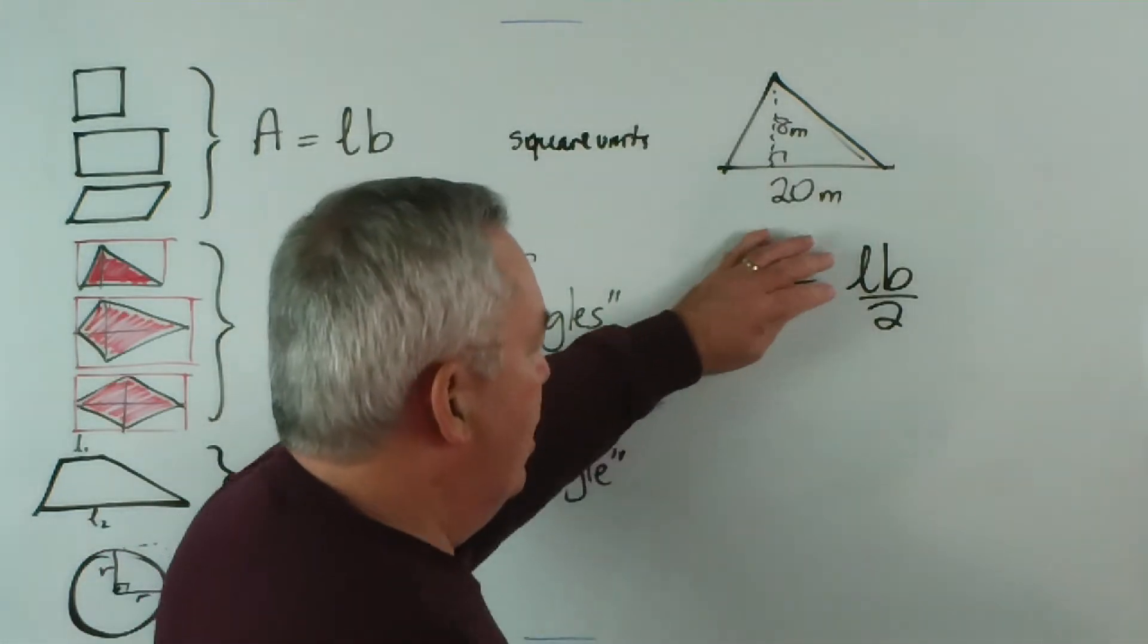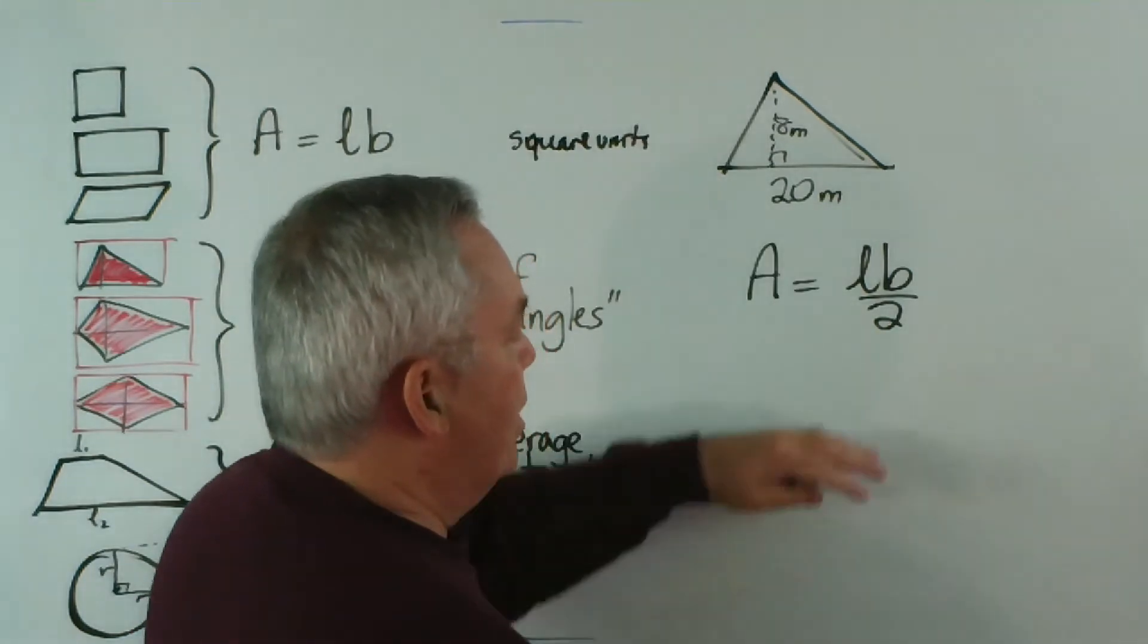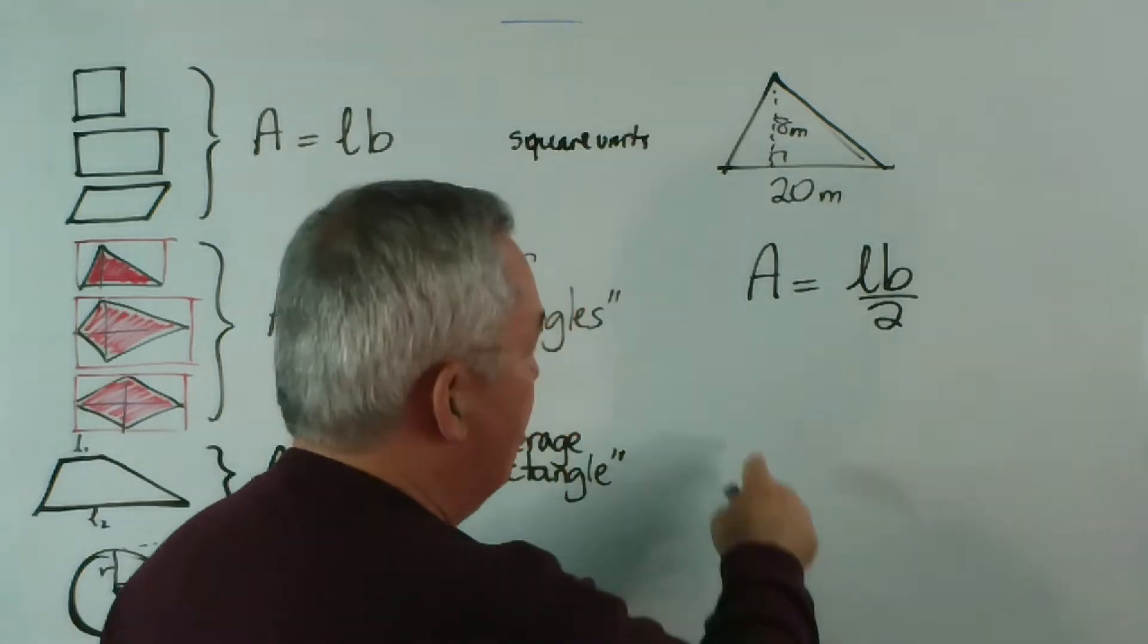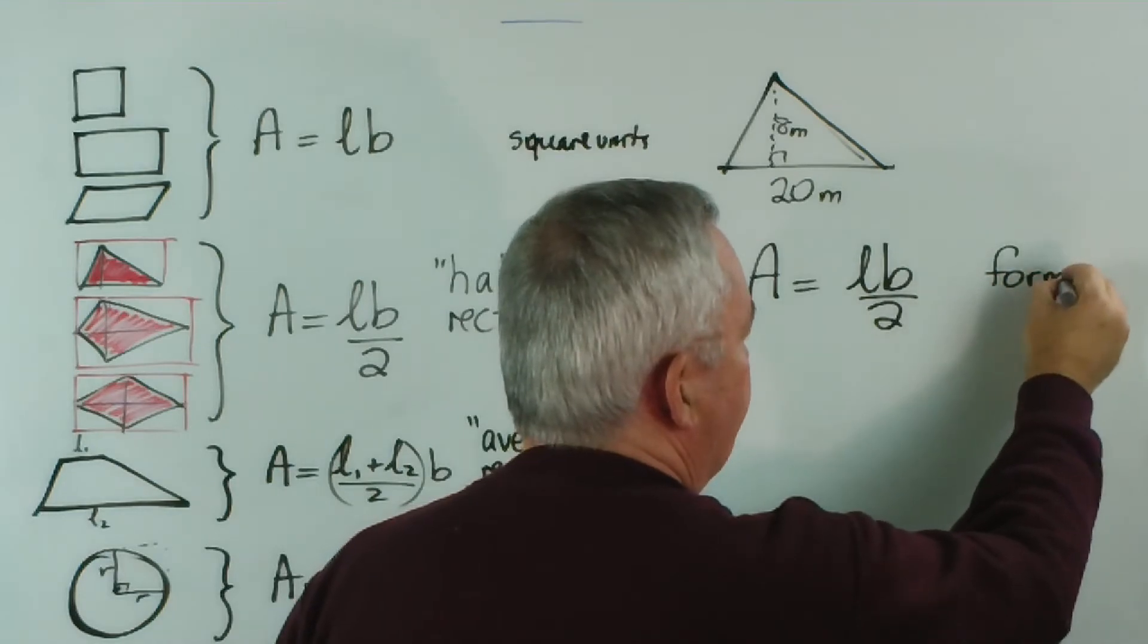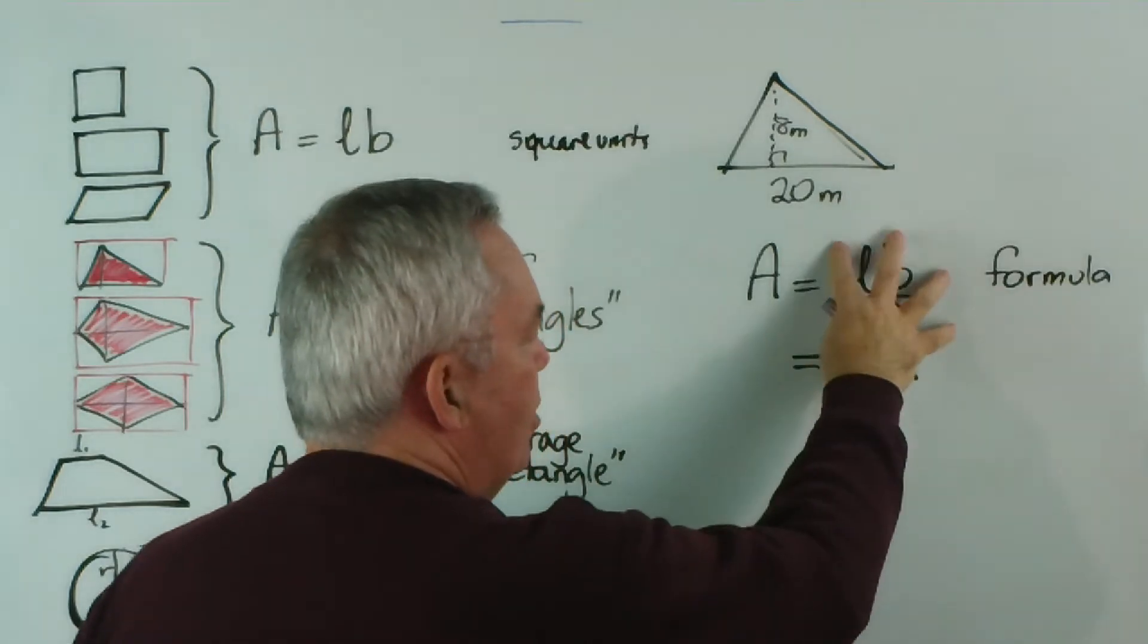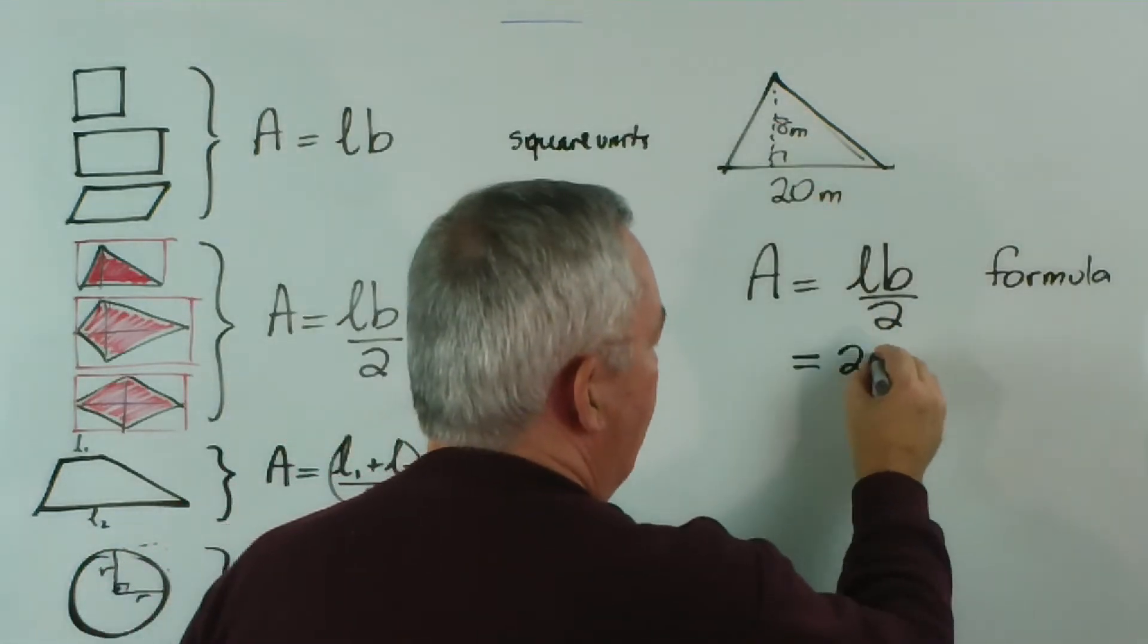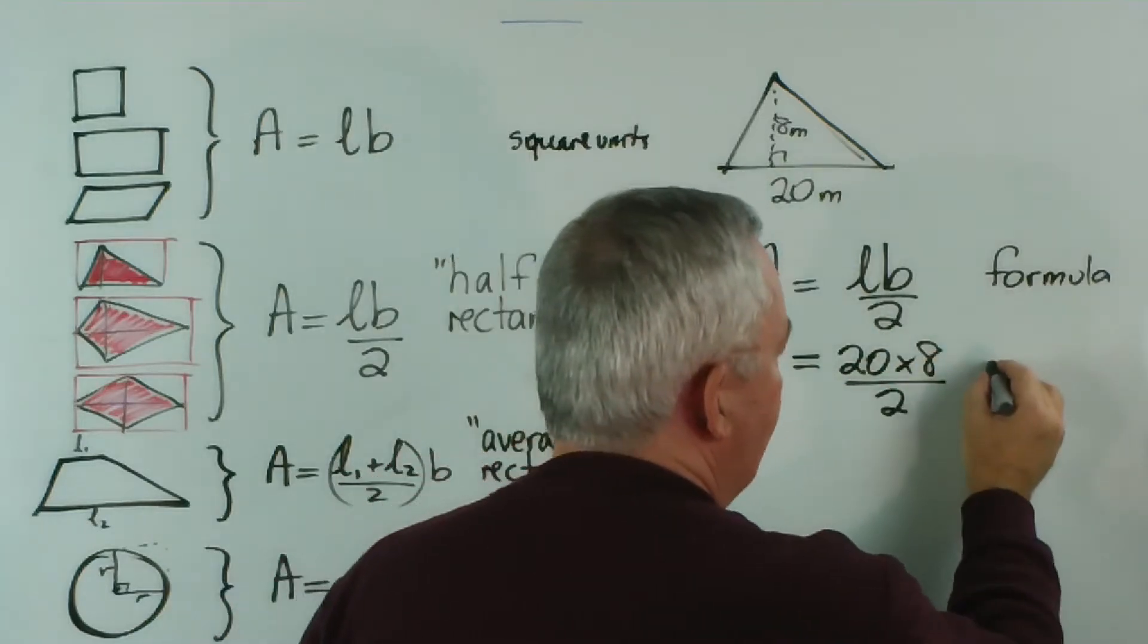Please write area equals... don't leave this off and just start writing pro-numerals. And please don't leave all of this out and just start writing numbers. This is a good way to explain what you're doing, to explain what you're finding and how you're going to find it. So I'll write formula here. The second thing we do is substitute the values from the problem. Now, you can see the length of this triangle is 20, and its breadth is 8. So we write 20 times 8 over 2. We'll call this substitute.